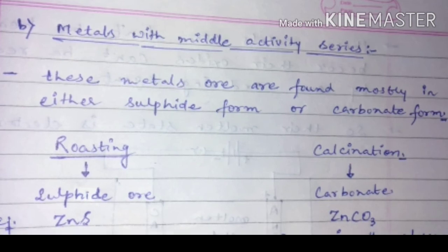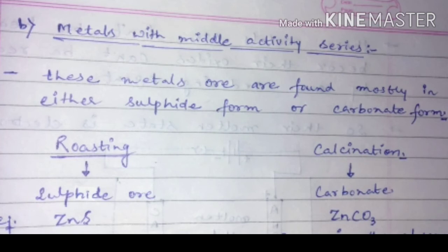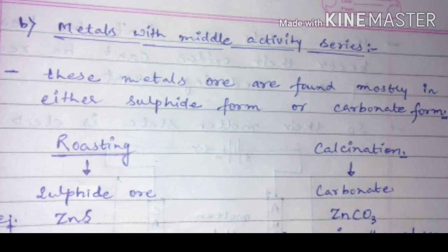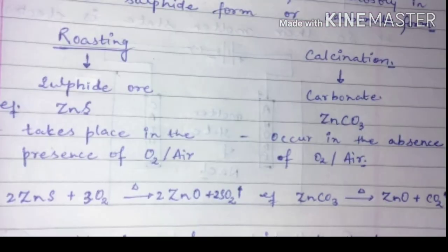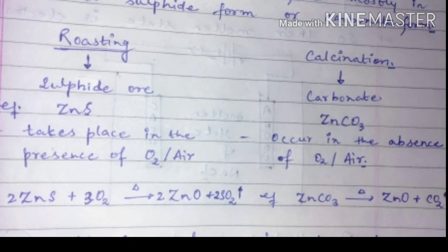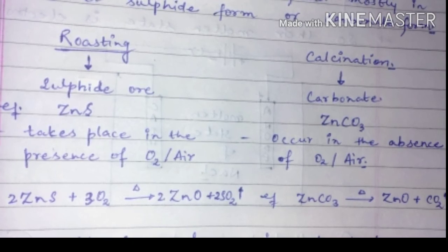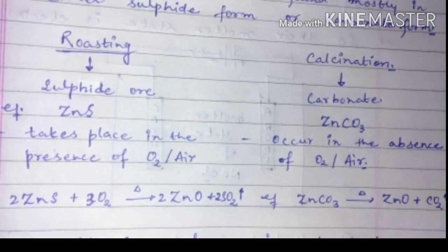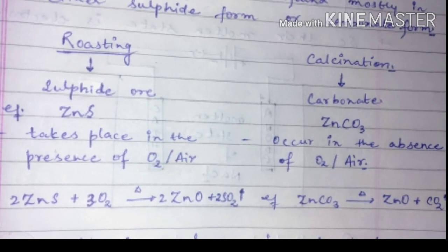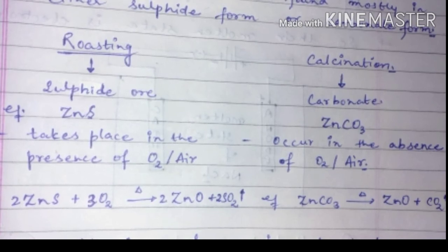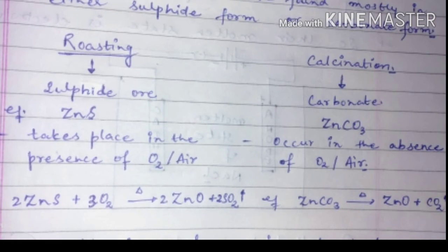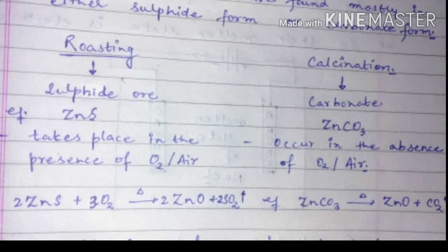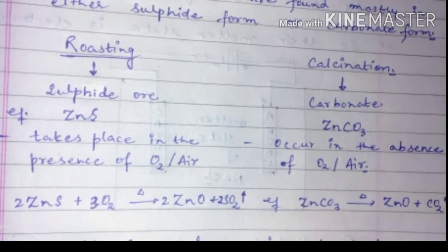For sulfide ores we mostly use the roasting process, and for carbonate ores we use the calcination process. For example, zinc sulfide is a sulfide ore — it requires heating in the presence of oxygen. As you can see, zinc sulfide reacts with oxygen and we get zinc oxide and sulfur dioxide.